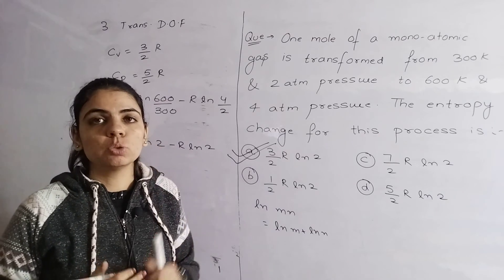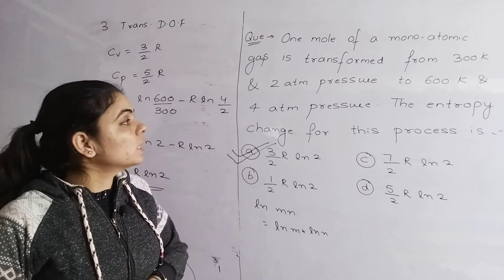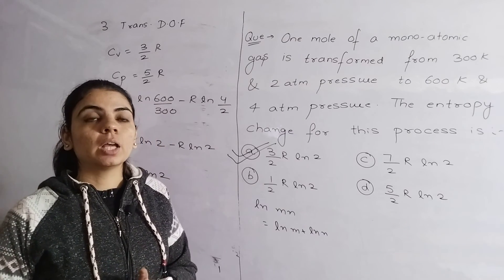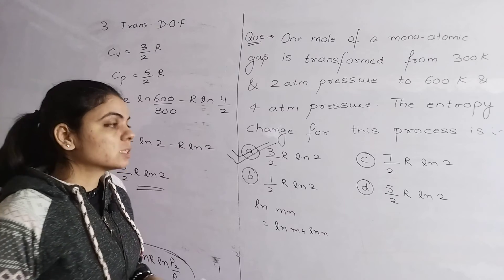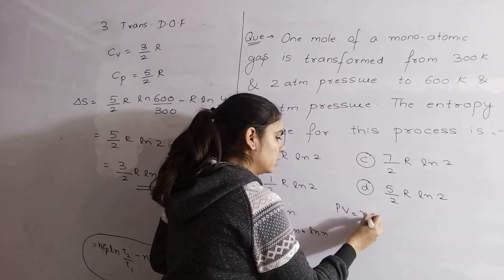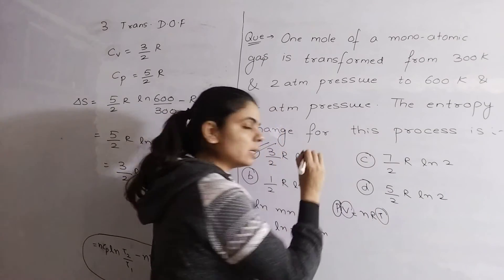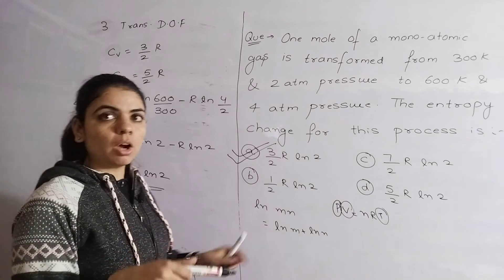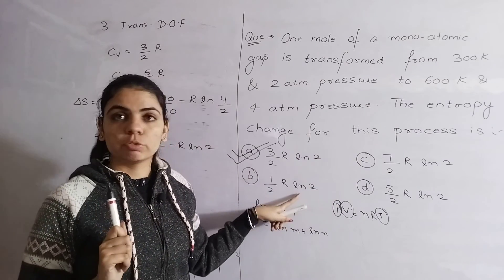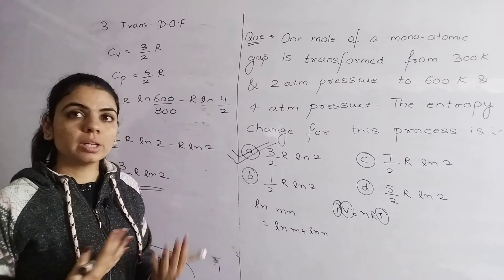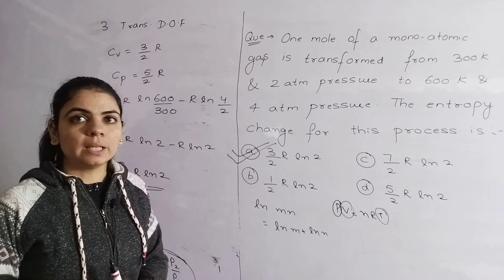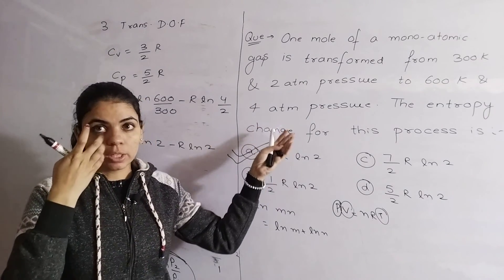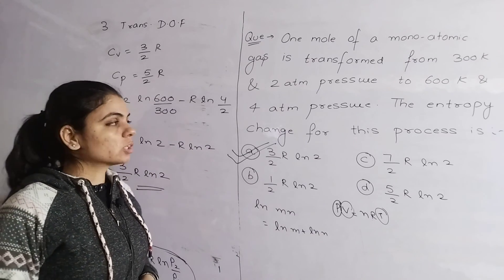This question is a bit tough because many results are being used here. So if you use the correct formula, the problem students had in this question was that nothing about volume was given. So what students have done is they have taken the process to be isochoric. But how can you take the process as isochoric? Think about it - if P and T are both changing, then chances are V is also changing. If the isochoric process is not given, you cannot assume it to be isochoric. You cannot take it as isochoric on your own. When it's not given, you have to deduce the formula in this way and put the values given, then you can solve the question.